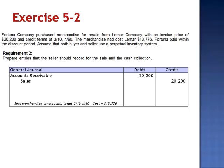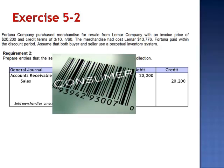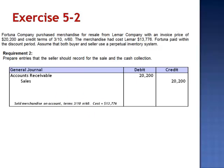One piece of information that the seller knew that the purchaser did not is that the inventory had cost $13,776. Since we're using a perpetual inventory system — a scanner system — once these units are scanned, not only has the sale been recorded, but simultaneously the units are removed from the inventory database. This journal entry is a debit to cost of goods sold, $13,776, and a credit to merchandise inventory.